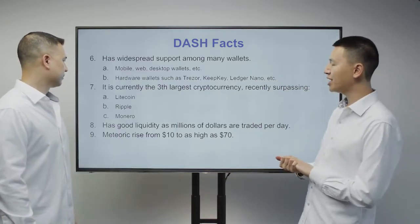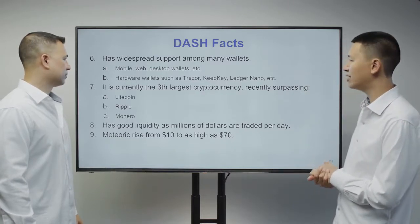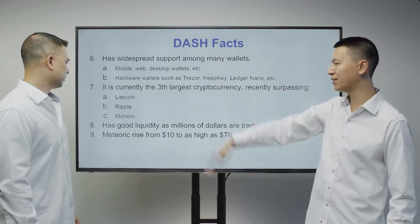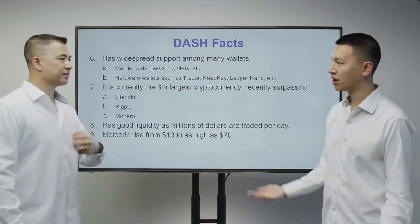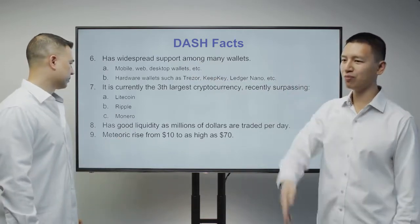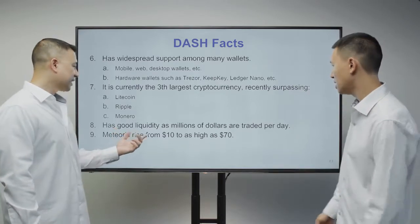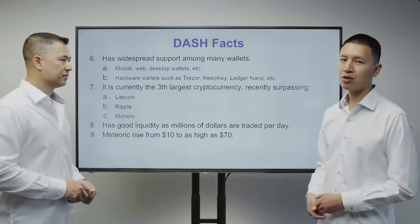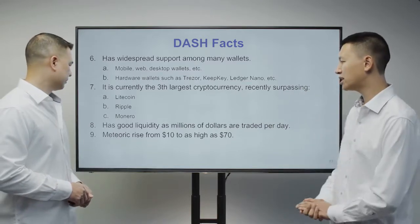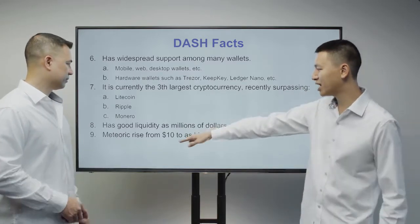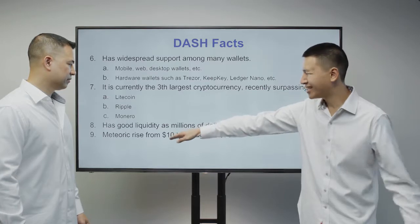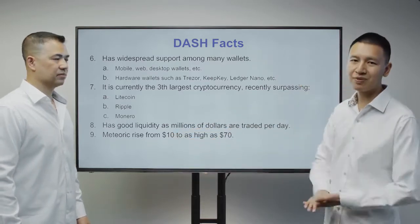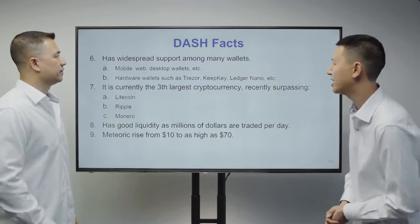Dash is now at number three after Bitcoin and Ethereum, having blown past Litecoin, Ripple, and Monero in market cap this year. It has excellent liquidity with millions of dollars of trade each day, so you have no problems getting in or out. It's had a meteoric rise — less than a year ago it was at $10, and now it's at $70.